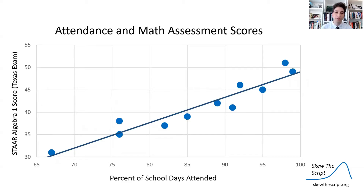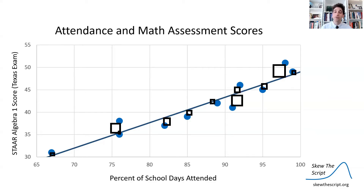In an earlier lesson we looked at this graph showing the percent of school days attended by some students and their score on the algebra one exam at the end of the school year. There's a strong positive linear relationship between the amount of school attended and how well they did on the exam. The relationship wasn't perfectly linear — using our least squares regression line there are some errors between what we predict and what students actually get. We call these errors residuals: the vertical distances between the dots and our linear model. To make that model we took those residuals, squared them, and fit the model to minimize the area of those squared residuals. That's how we get our least squares regression line.